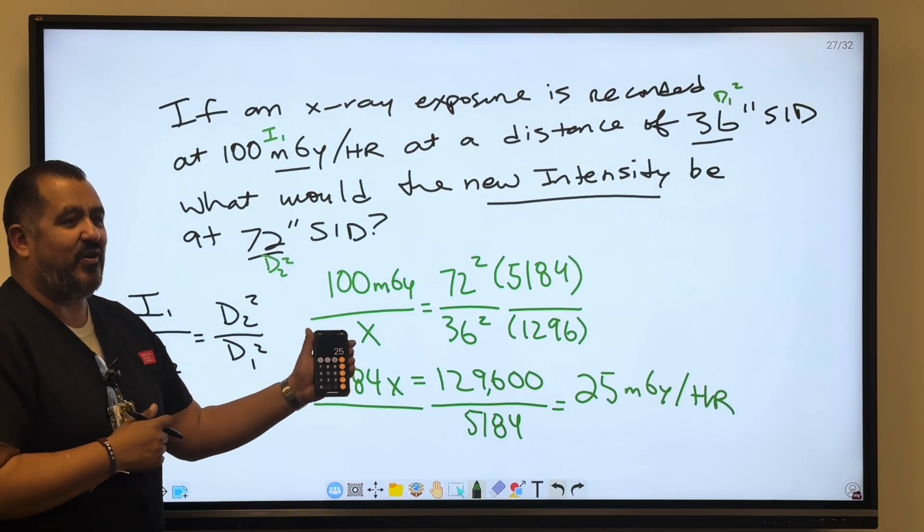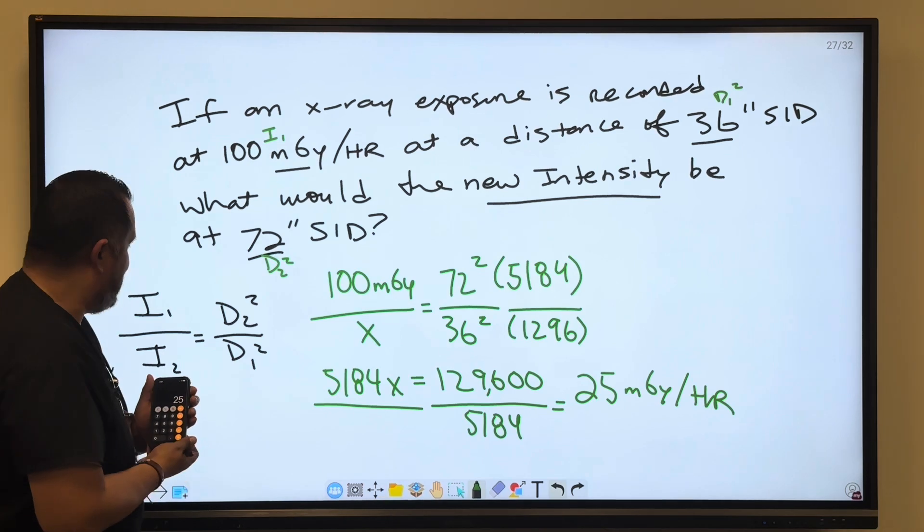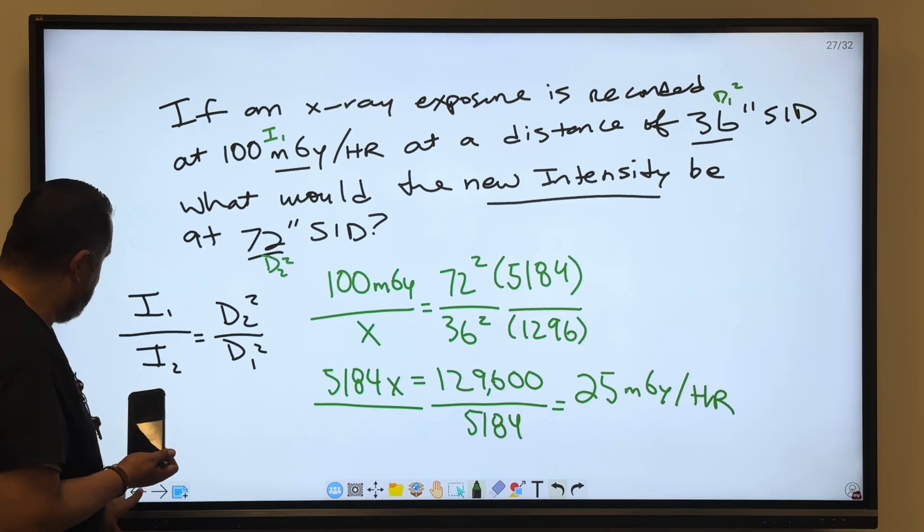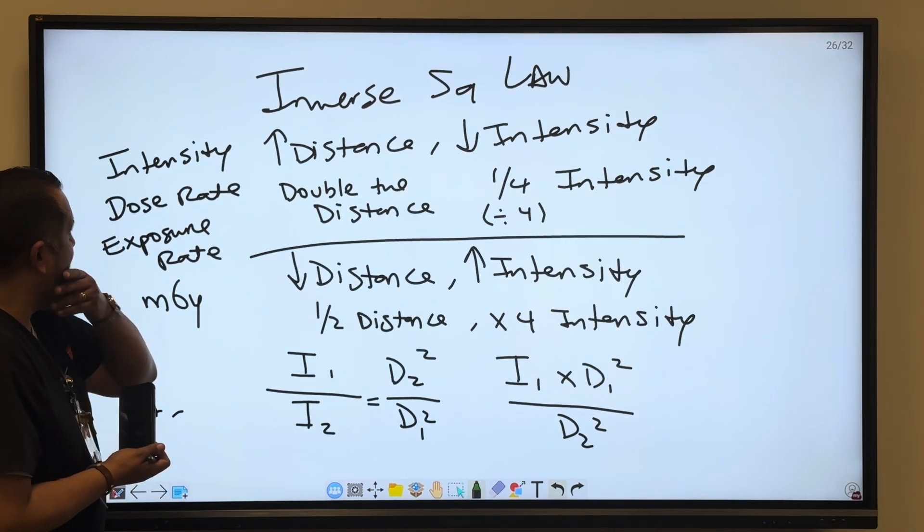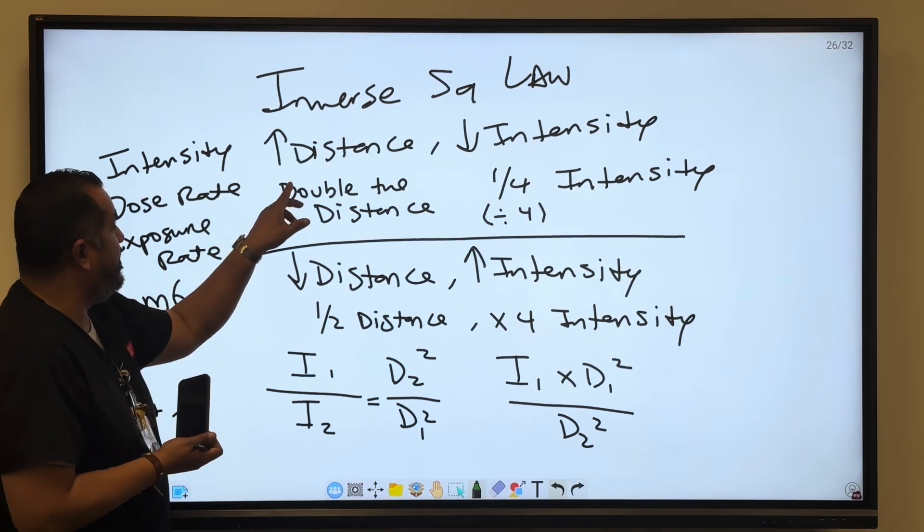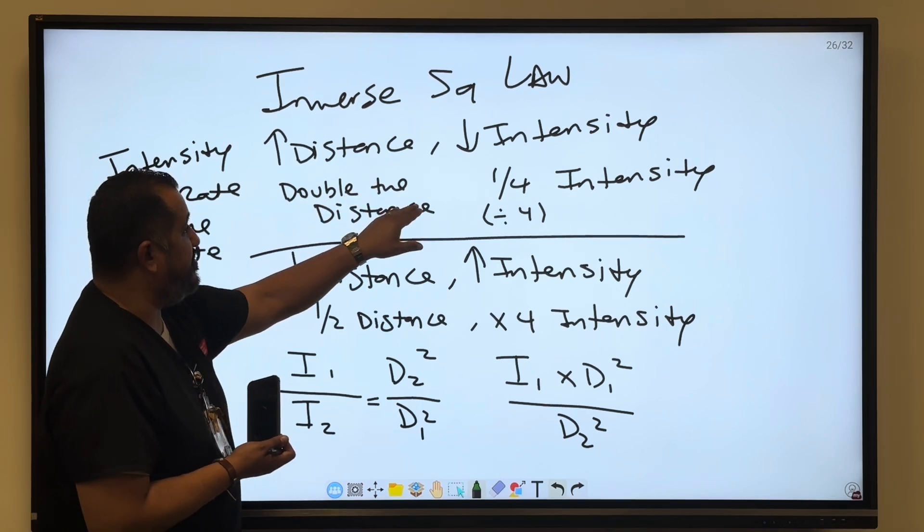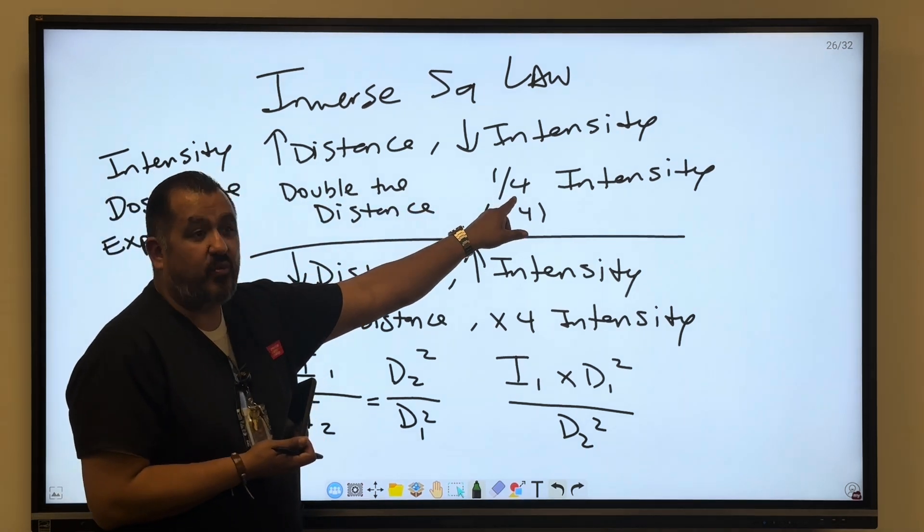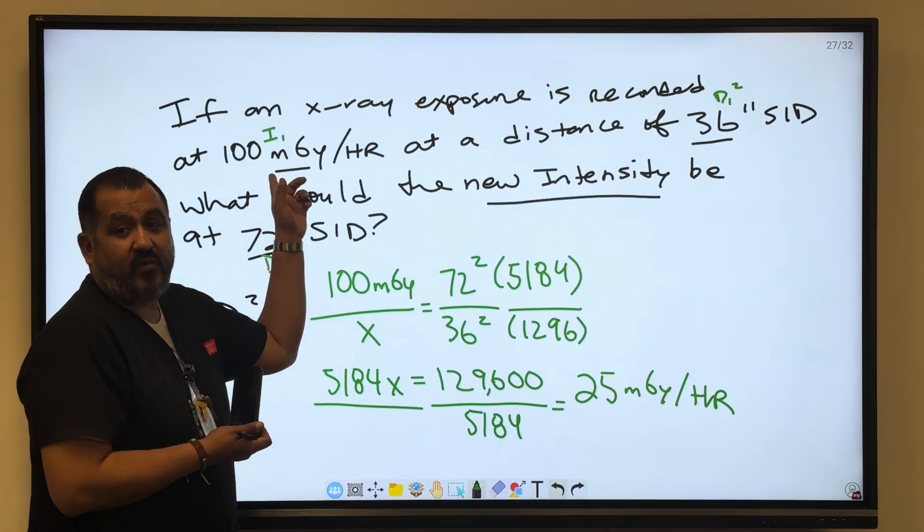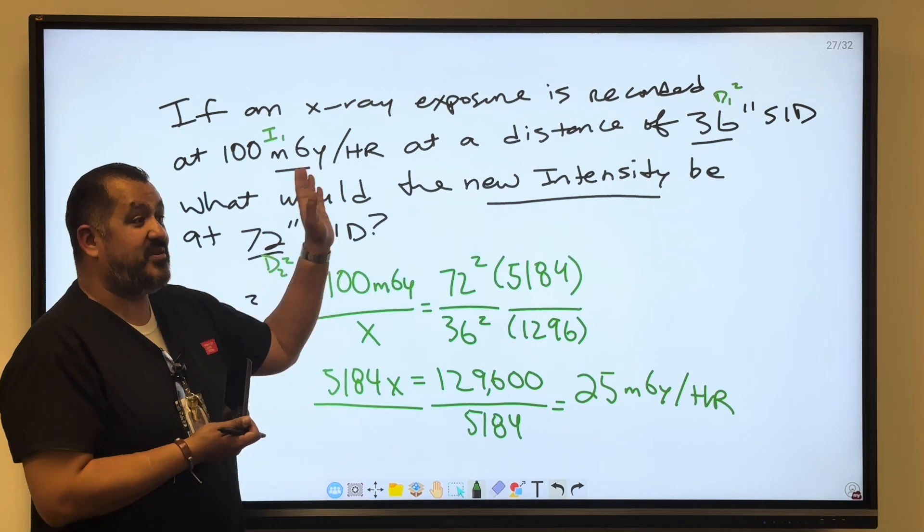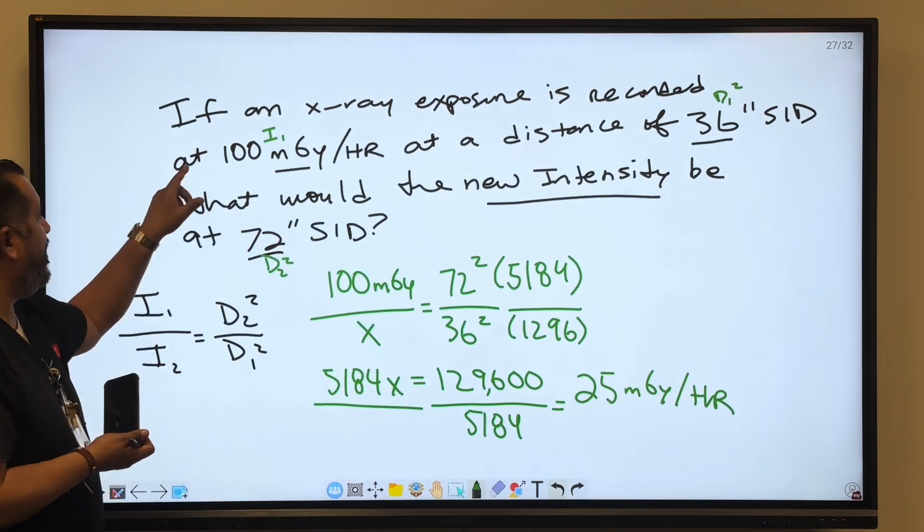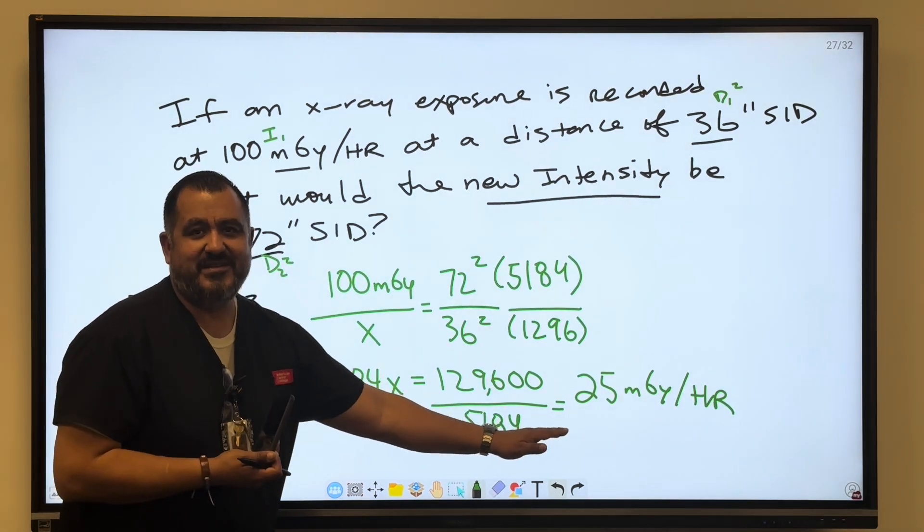How did we get there so fast without having to do all this? Well, in the previous slide we said that if you doubled the distance from 36 to 72, then the intensity or the exposure rate is going to be one-fourth of the original intensity. So all I had to do was divide it by 4, that's the rule of thumb. So 100 milligray divided by 4 is 25.